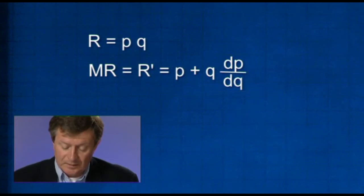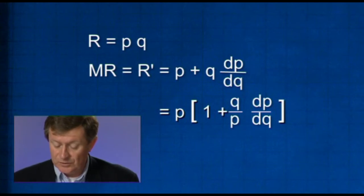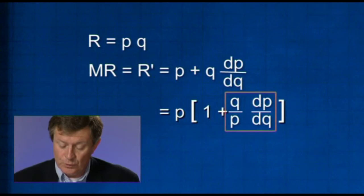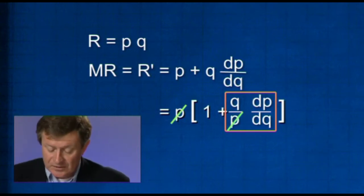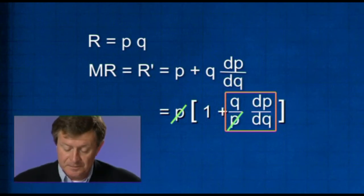If I write P into, the first term obviously is just 1, if I now write Q over P times dP/dQ, we can see that this expression is just as we had before, that P will cancel out with the P outside the bracket. And so I have P into 1 plus.